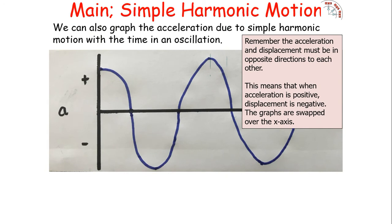We can also graph the acceleration due to simple harmonic motion against time. Because acceleration and displacement are directly proportional to each other, they have the same shaped curve. However, acceleration and displacement must act in opposite directions — that is condition two of simple harmonic motion. So whilst you have a negative displacement at the start, you have a positive acceleration, and vice versa.